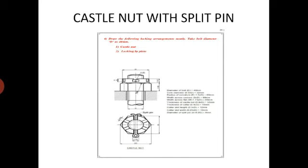Now we have to draw the extended part — the part that has a number of slots for inserting split pin. Extend 0.4D from that 0.25D length. Now open the compass and mark the 0.5D hole or slot through which the split pin has to pass. Extend the dimensions. After that, our castle nut along with split pin is completed.